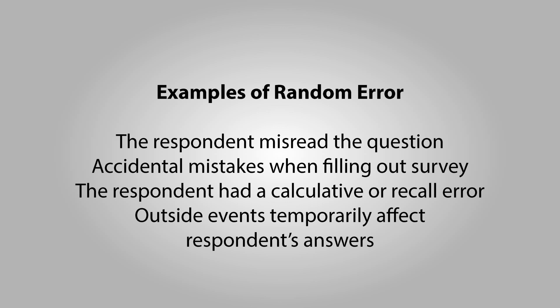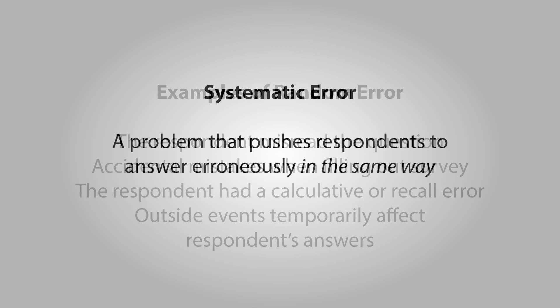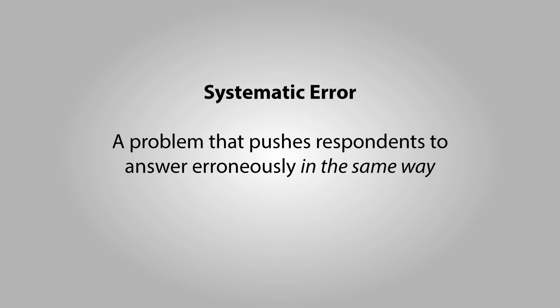Systematic error happens when there's something in the question or the measurement scheme itself that pushes all respondents to answer erroneously and in the same way.